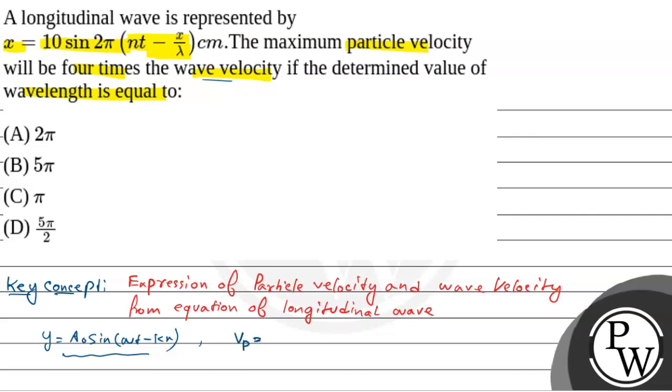So particle velocity vp will be vp_max. Maximum particle velocity will be Aω.